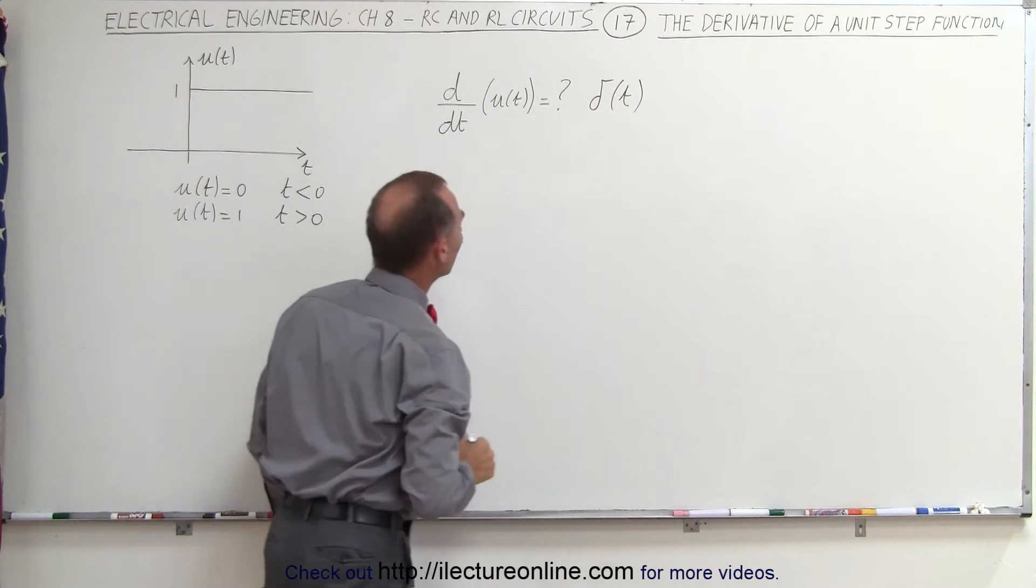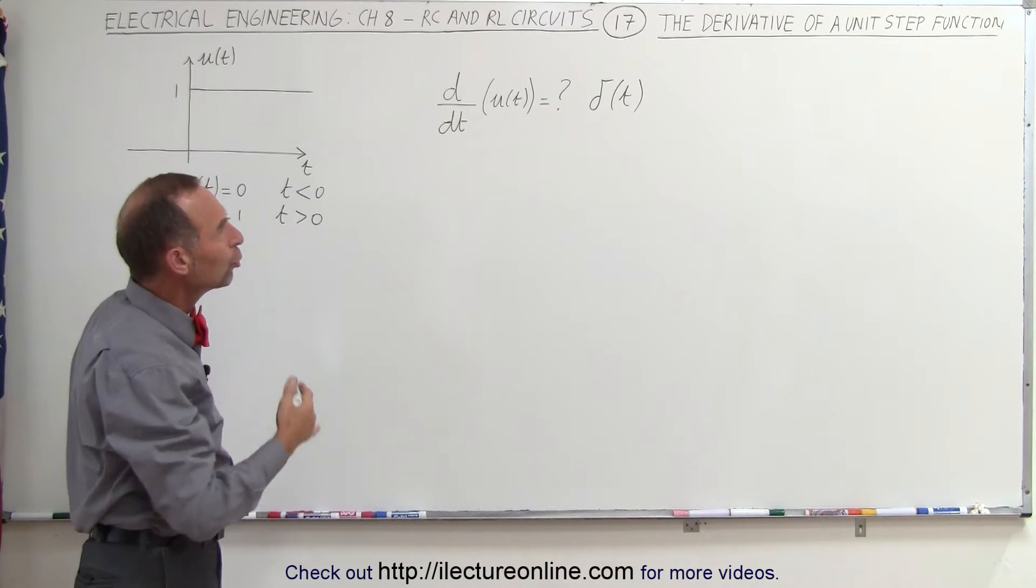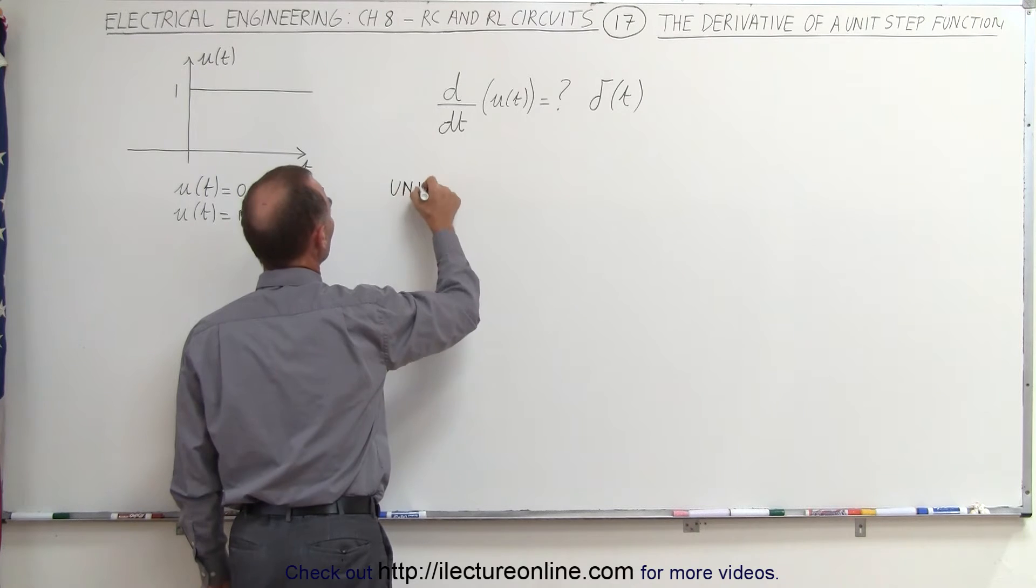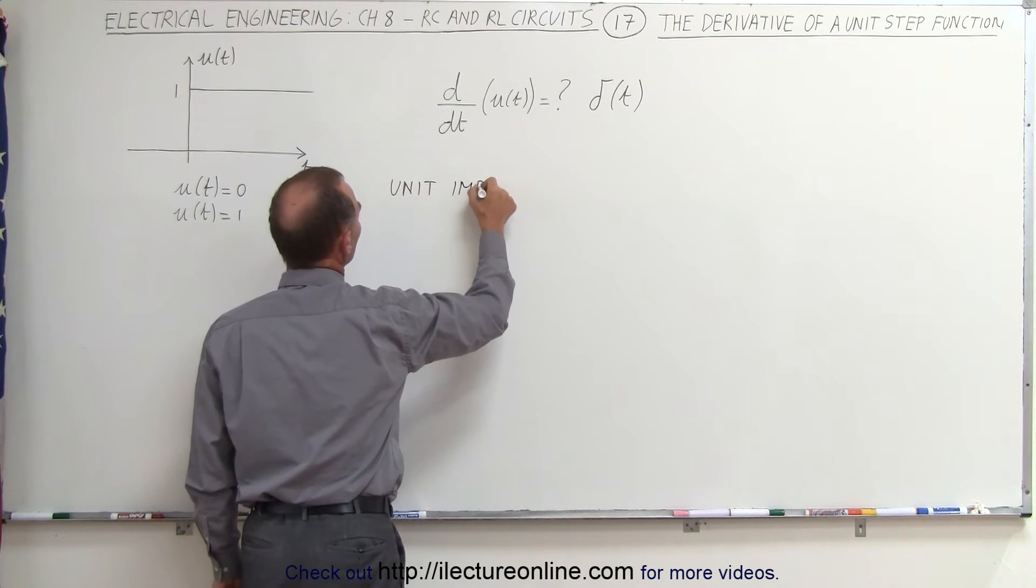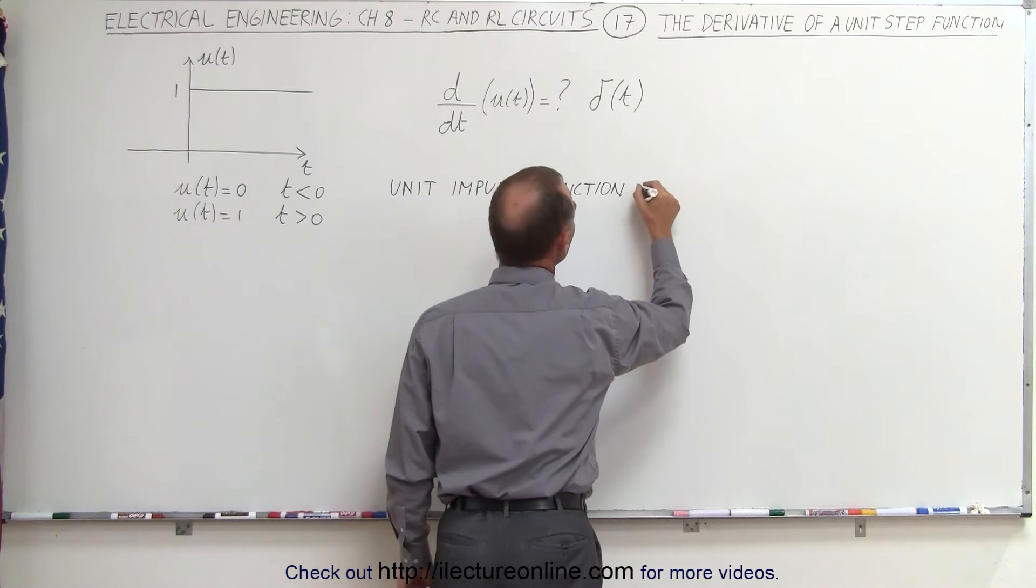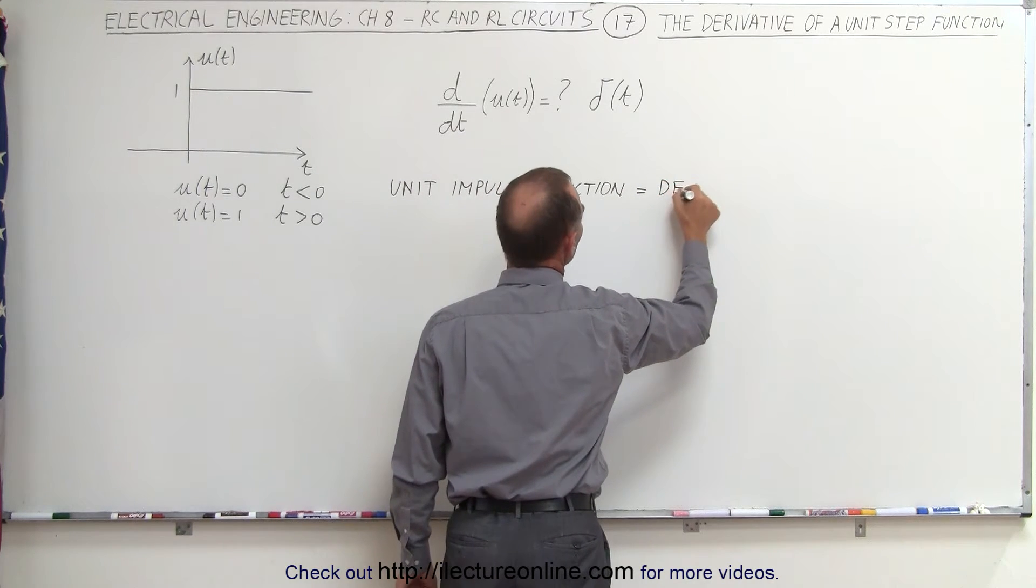Now, what does this mean here? Well, another name for it is the unit impulse function. Let's write that down. So the unit impulse function, otherwise known in mathematics as the delta function,